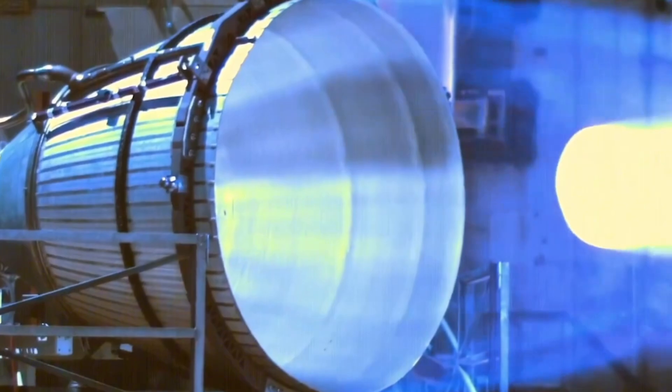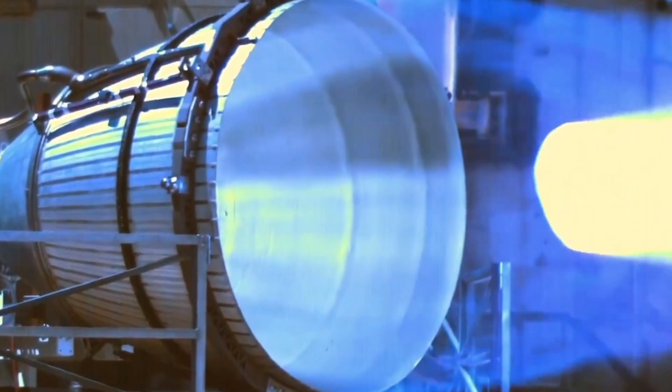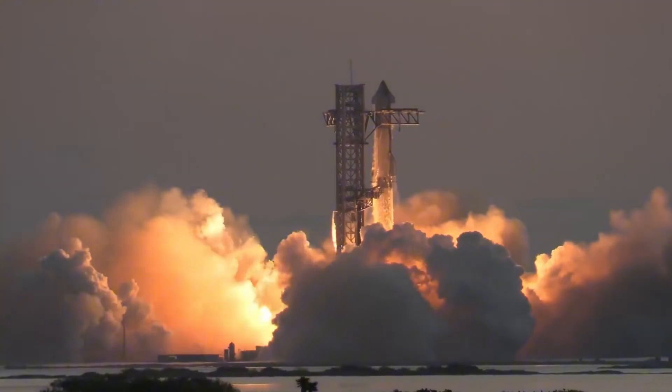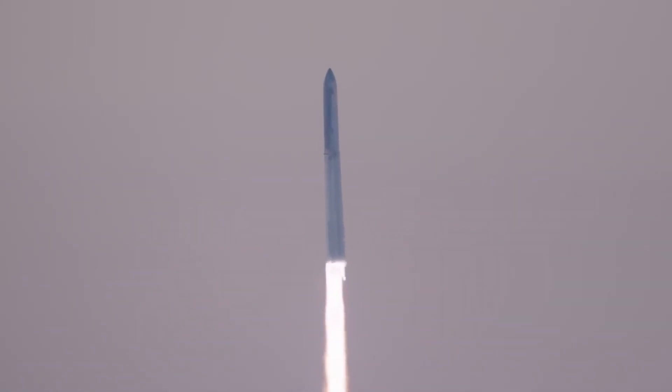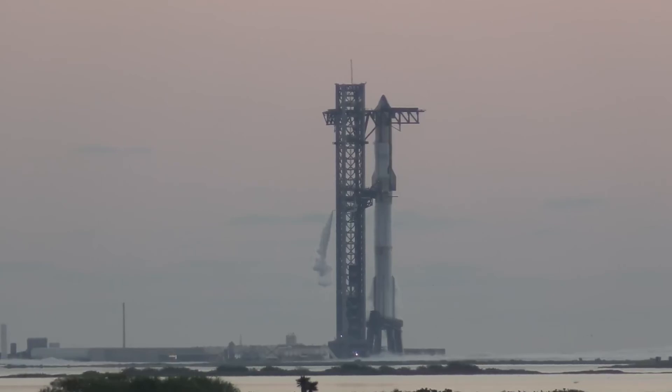The chamber pressure in Raptor 3 pushes the boundaries of what's possible in rocket engine design. Operating at pressures exceeding 300 bar, more than three times the pressure at the bottom of the deepest ocean, it generates what Musk describes as the highest heat flux of anything ever made. This extreme pressure doesn't just deliver raw power, it enables more efficient combustion and higher specific impulse, translating directly into improved payload capacity and performance. The high pressure also allows for a more compact design, reducing the engine's overall size by 20 percent compared to Raptor 2.